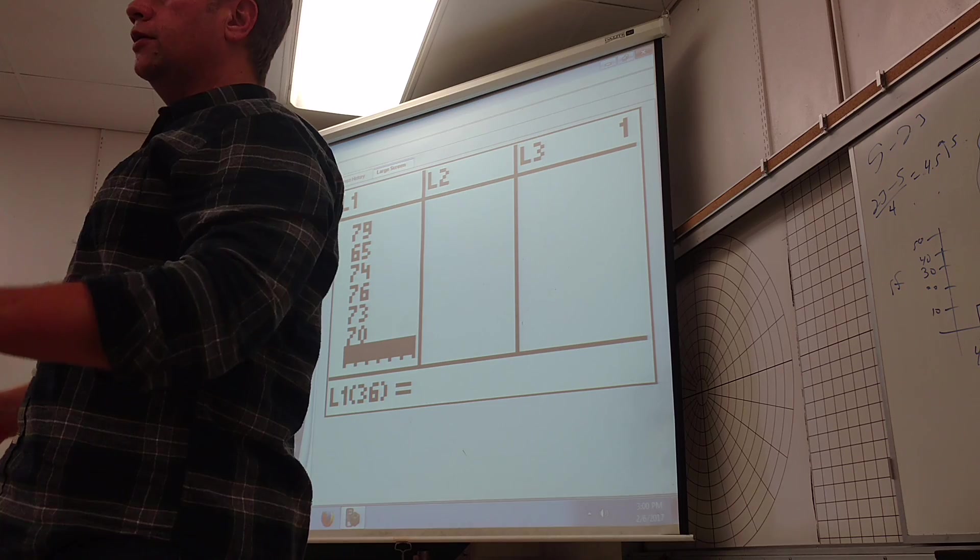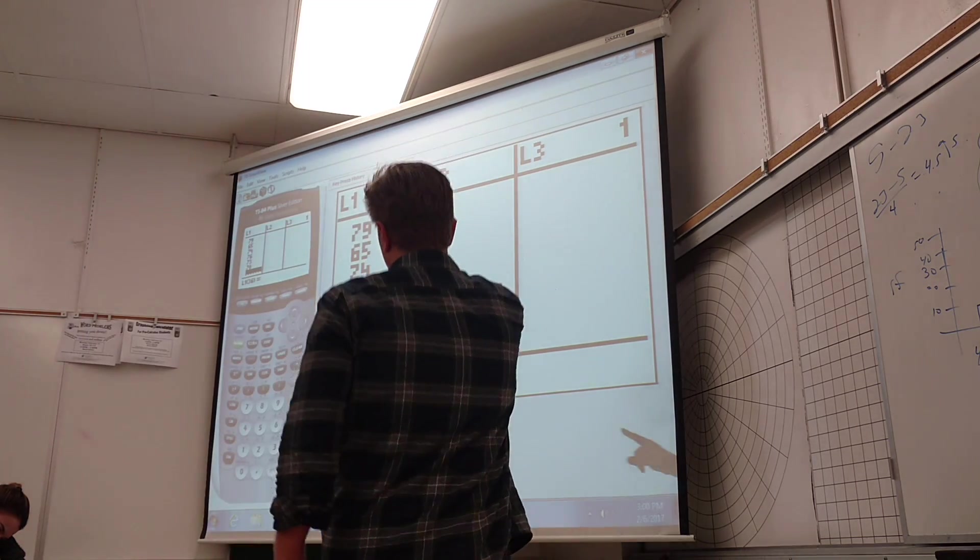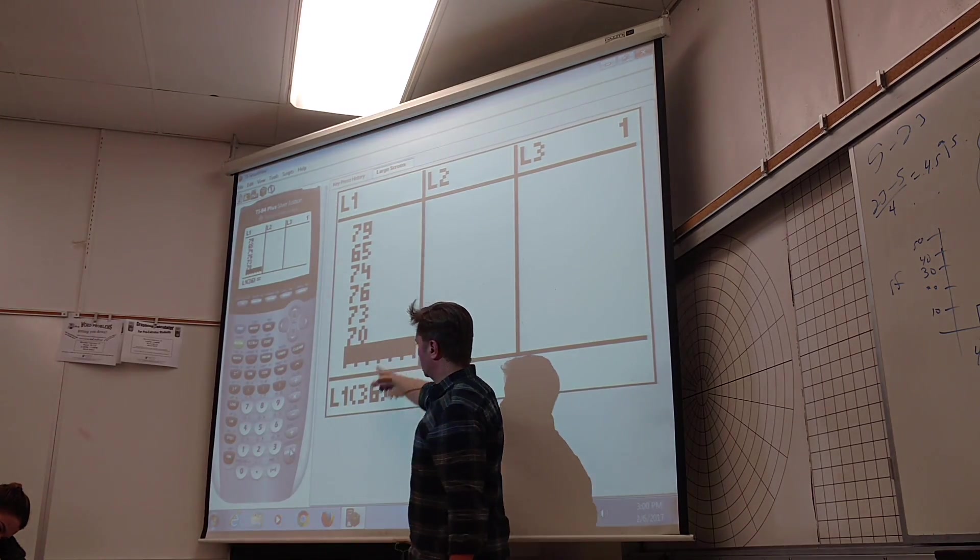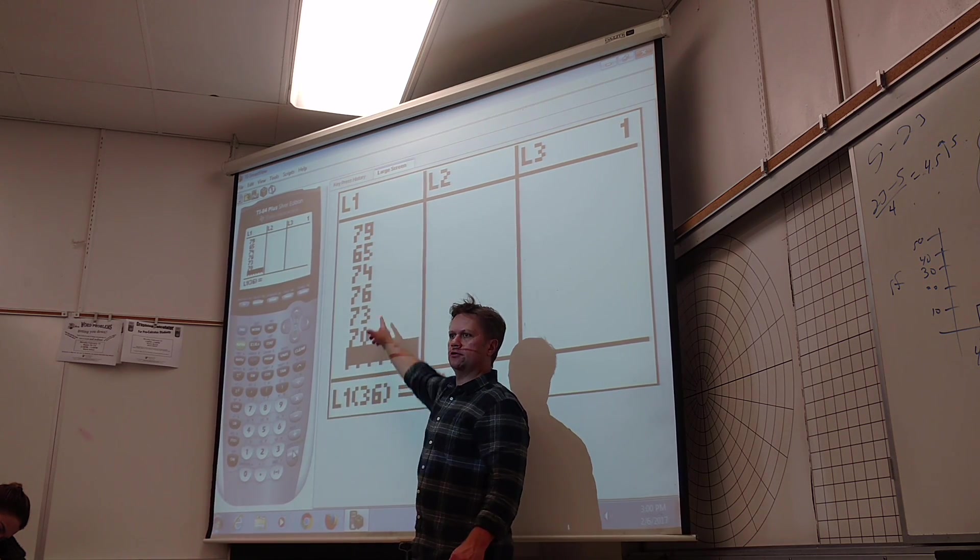So if you got all the data points in, the blank spot at the end should be the 36th spot because there's 35 data points.